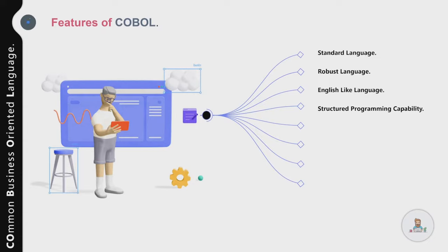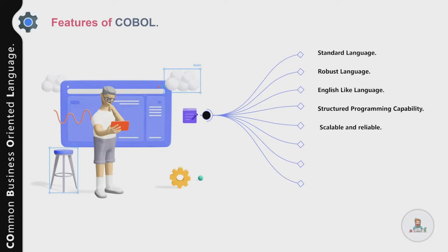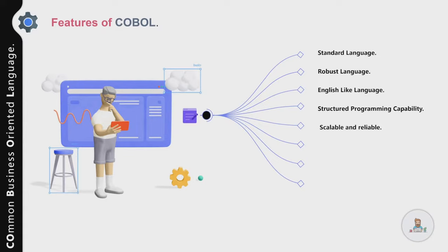The next feature is structured programming capability. Structured programming refers to a collection of techniques that help a programmer develop structured programs. COBOL programs are divided into different divisions, each with its own significance. For example, if you want to include your business logic, you generally use the Procedure Division, where the logic can be divided into paragraphs or sections.